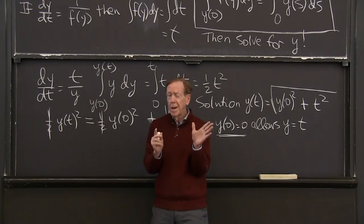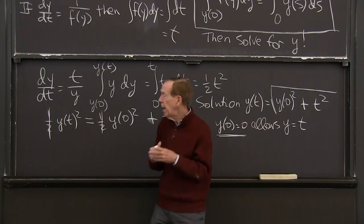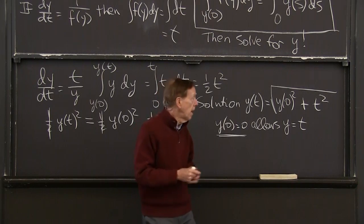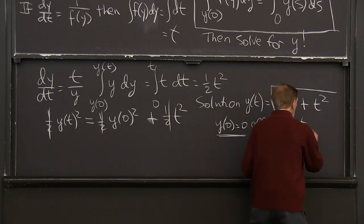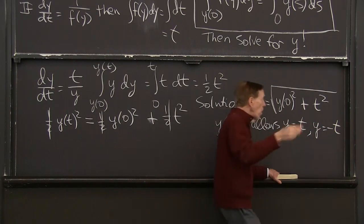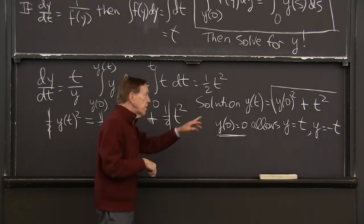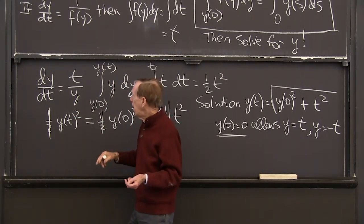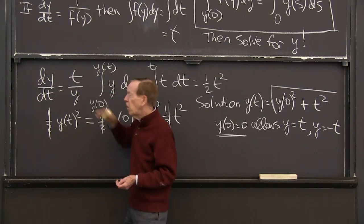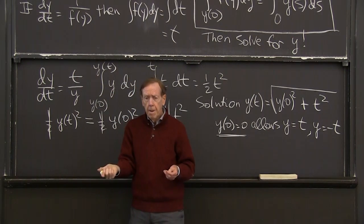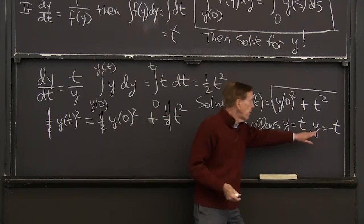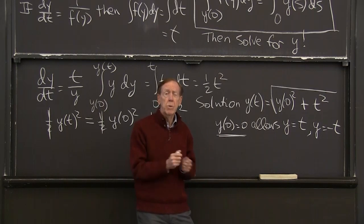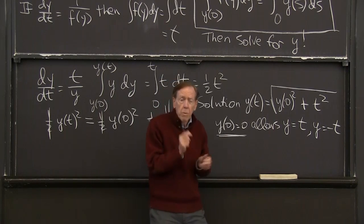But my point was, there's got to be something going a little strange when y of 0 is 0. And what happens, strangely, is there were other solutions. I like, I think, y equal negative t and more, probably. But if y is equal to negative t, then its derivative is minus 1. And on the right-hand side, I have t over negative t minus 1 again. So the equation is solved. That's a perfectly good solution. That's a second solution. It's an equation with more than one solution.